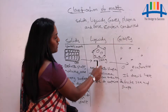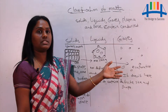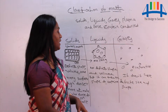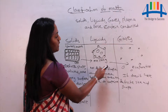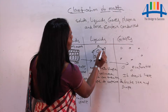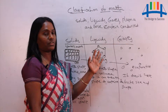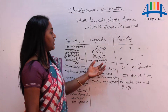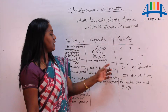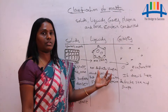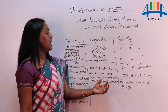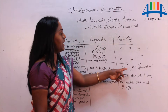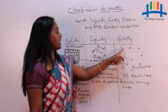We can also convert liquid state into gaseous state by providing more heat energy. On applying more heat energy, the intermolecular space increases and the force of attraction decreases, and it converts into gaseous state. This transfer — conversion of liquid state to gaseous state on applying heat energy — is called evaporation. During evaporation, kinetic energy, meaning movement of the particles, increases.